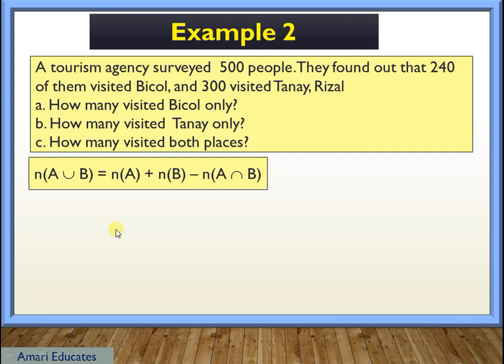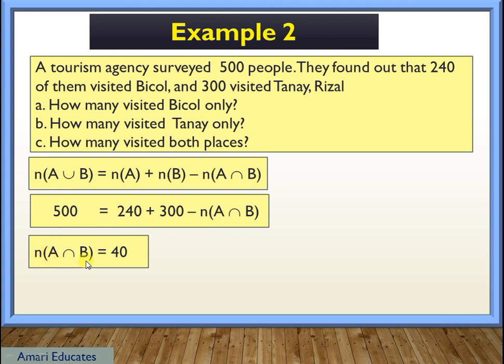Now let's put all the values. So 500 is the population, and for Bicol, we have 240, which is for this one, and for the Tanay, we have 300. Again, the missing is the intersection. So the value of the intersection will be 40.